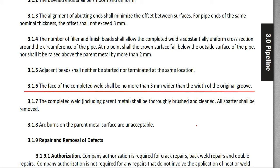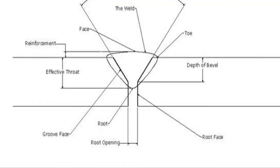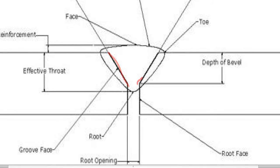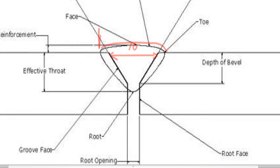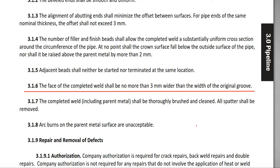3.1.6: The face of the completed weld shall be no more than 3 millimeters wider than the width of the original groove. So the original groove is here, and the weld is made here. The completed weld face width shall not exceed the original groove width by more than 3 millimeters.